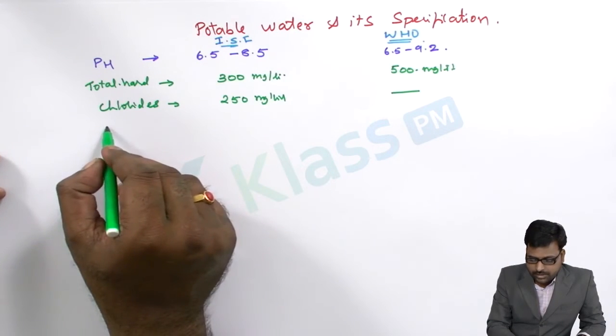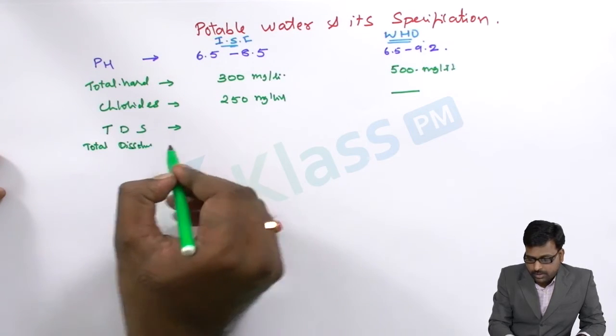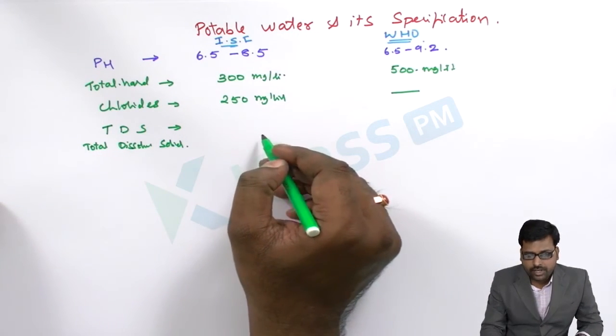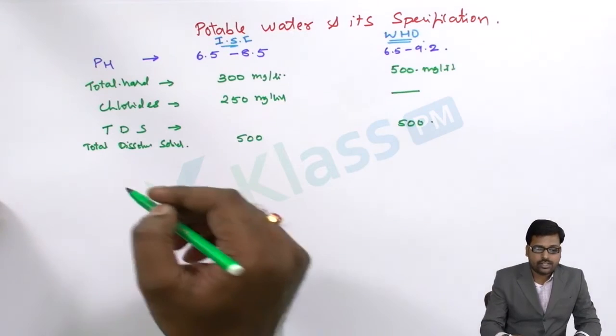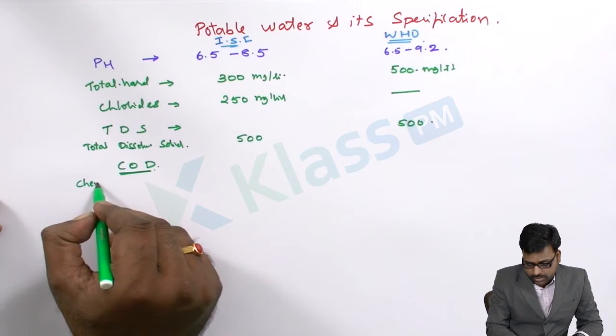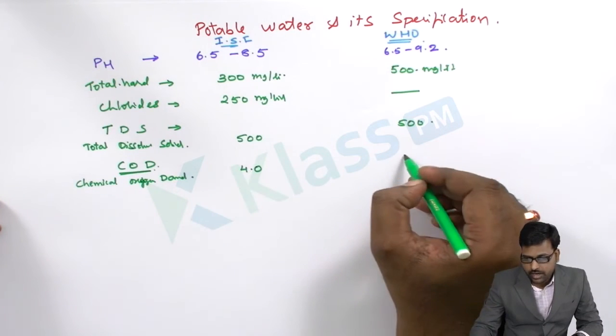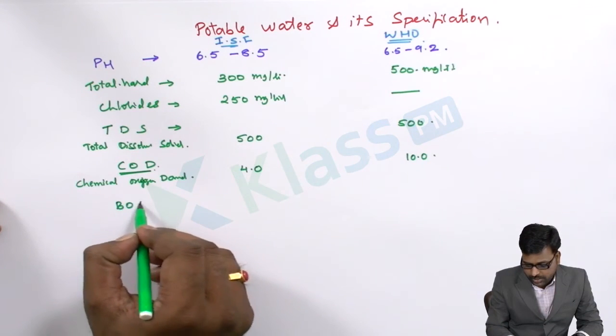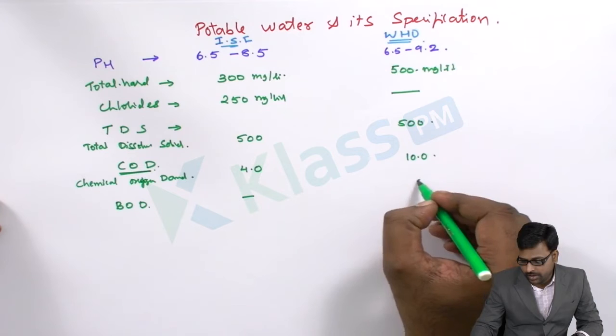Now let's see the TDS. TDS is total dissolved solids. TDS as per the Indian standards is given 500 and even the WHO also given it is 500. And the COD, COD is chemical oxygen demand. COD is 4 in case of Indian standards and it is 10 with regards to the WHO. And BOD, the biological oxygen demand, is not given in Indian standard but rather it is given in WHO, that is 6.0.